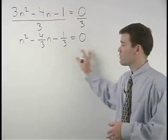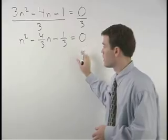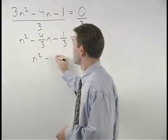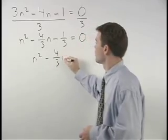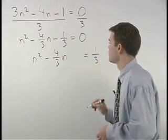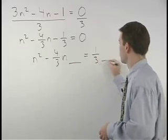Next, we move the negative 1 third to the right side of the equation and we have n squared minus 4 thirds n equals 1 third. And remember to leave room for your spaces.